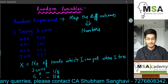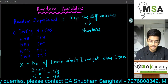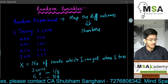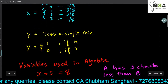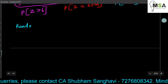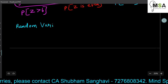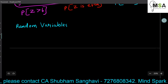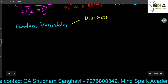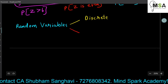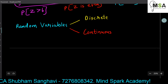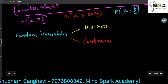Hi guys, this is Yeshubam Sangvi. In the last video we discussed the concept of random variables. In this video we are going to discuss the two main types of random variables. Random variables are basically of two types: one is discrete random variables and the other is continuous random variable.